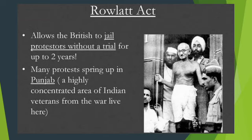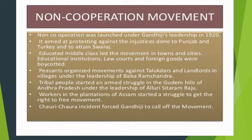The Non-Cooperation Movement was launched under Gandhiji's leadership in 1920. It was aimed at protesting against injustices done in Punjab and Turkey and to attain Swaraj. There were three or four reasons the movement was launched. In the Hind Swaraj book, it was written that if we don't support the British, they will leave. The educated middle class led the movement in towns and cities — educational institutions, law courts, and foreign goods were boycotted.